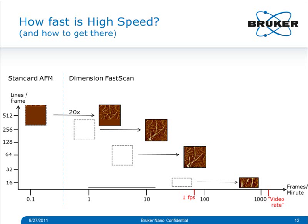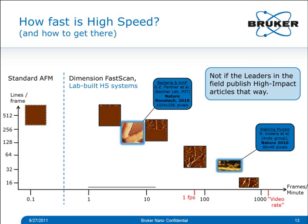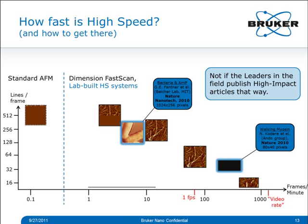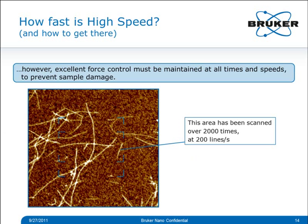If someone has paid attention to frames-per-second numbers only, they might ask: isn't that cheating? I hope to answer this by putting two recent high-profile high-speed AFM publications under the same graph. These are the famous walking myosin data by Ando et al., and the E. coli response to antimicrobial peptide. The bacteria was recorded with 256 lines, the myosin with only 40 lines per frame. So it's not cheating if the leaders in the field publish high-impact articles that way. However, one condition must always be met: excellent force control must be maintained at all times and speeds, to prevent damaging the sample or unduly influencing the observed process.